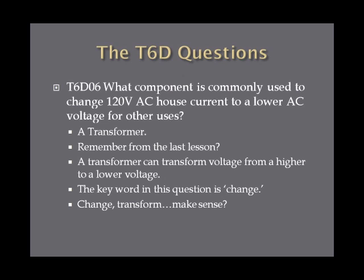What component is commonly used to change 120 volt AC house current to a lower AC voltage for other uses? This is a transformer — we talked about this in the last lesson. A transformer can transform voltage from a higher to a lower voltage in an AC circuit. The key word in this question is "change" — change or transform. A transformer can change 120 volt AC to a lower AC for other uses.